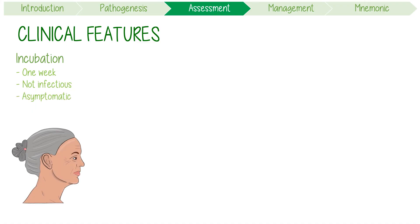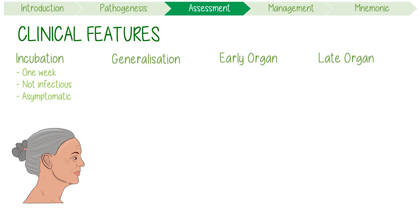After this, there are three phases: a generalised phase, an early organ phase, and a late organ phase. Each one lasts approximately one week, and you can use the acronym THE BAD COP to remember the features in each one.